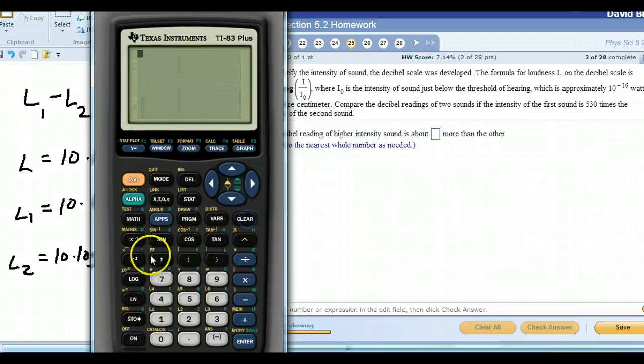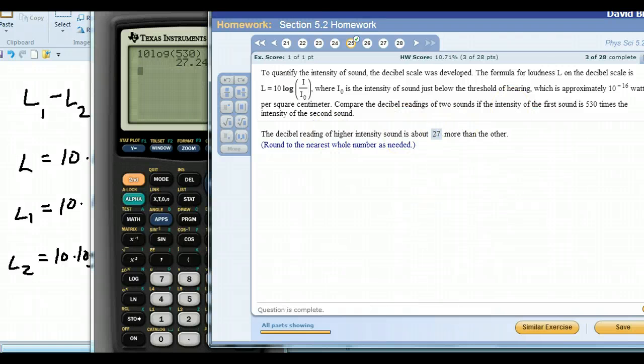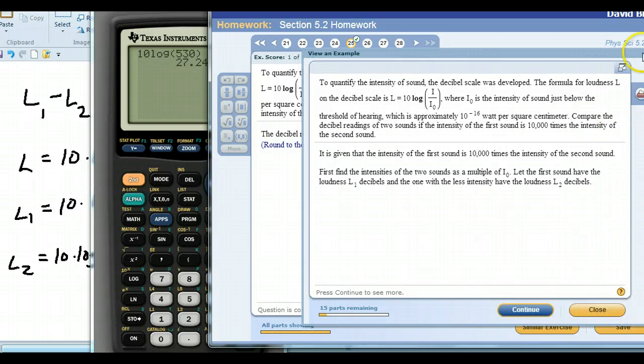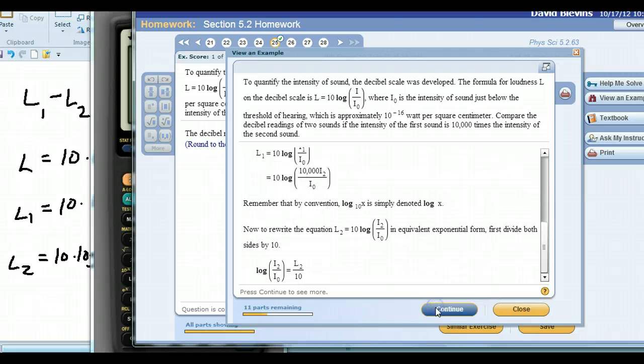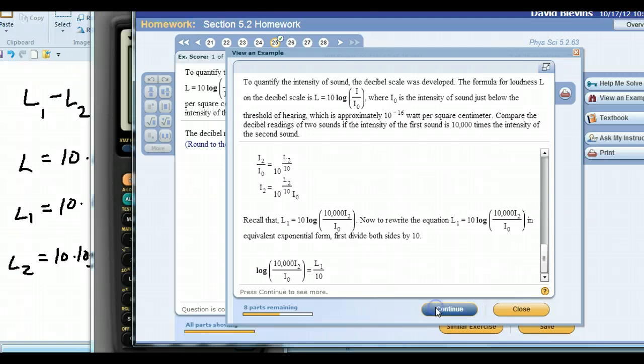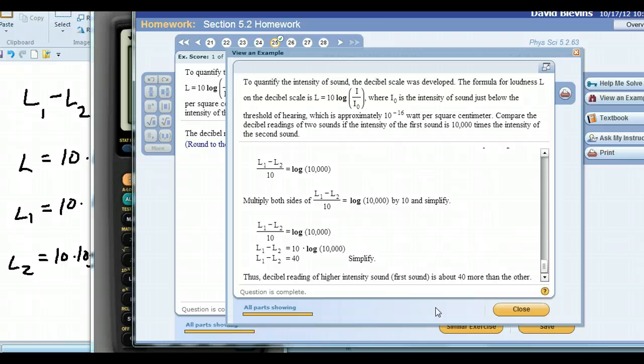All right, so 10 times the log of 530. And then they're going to want you to round this to the nearest whole number, so 27 roughly. All right, now if you were to do this viewing the example, let me just show you real quick. If you were to do this viewing the example, look at all this stuff it has you do. Okay, it changes all this stuff and it makes all these ratios and it raises things to powers and it goes into this ridiculously long, grave detail about everything. All right, when all in all, if you look down here at the very end, for this one it's 10,000 times more than the other. 10 times the log of 10,000, okay. So it's the same thing that we just did. 10 times the log, instead of this, put in the intensity factor and then just put it on your calculator and hit enter and round it, okay. That's all you have to do to this problem.